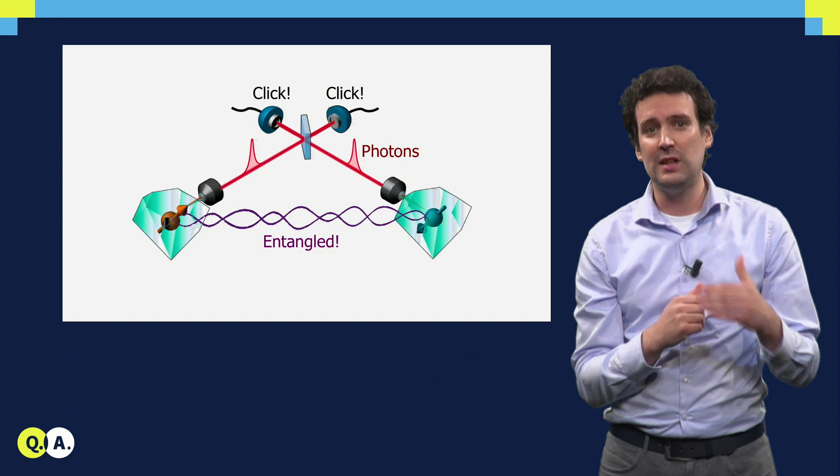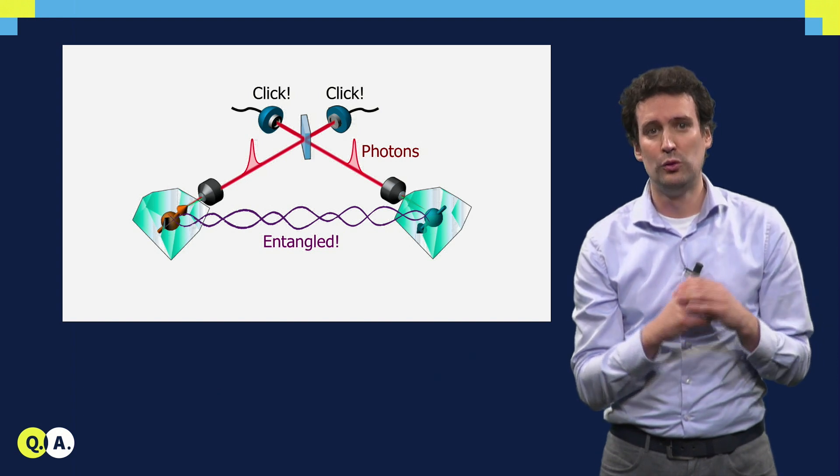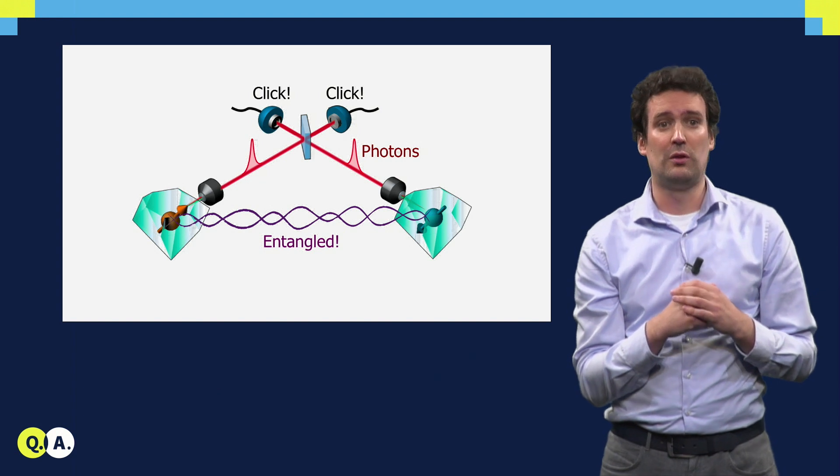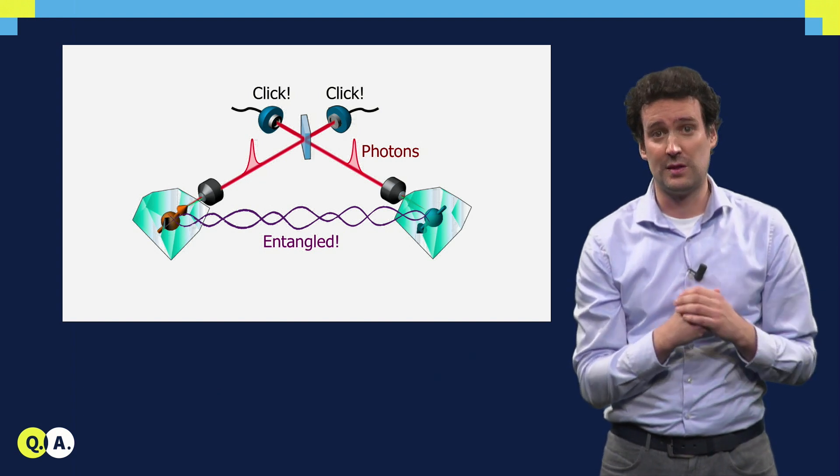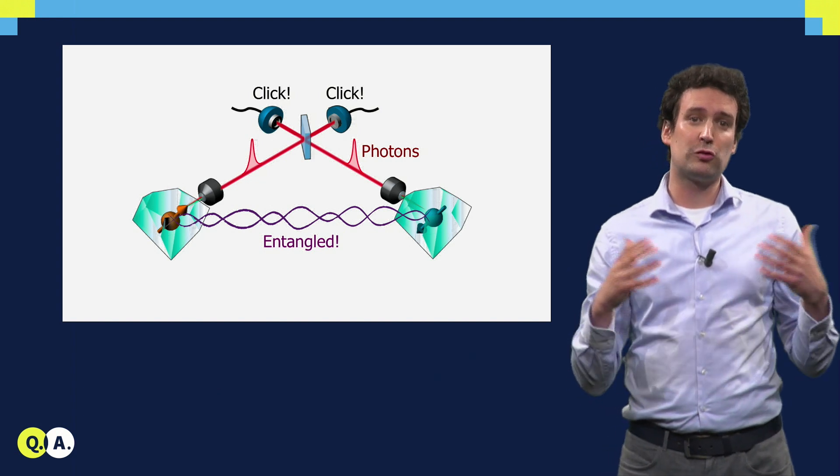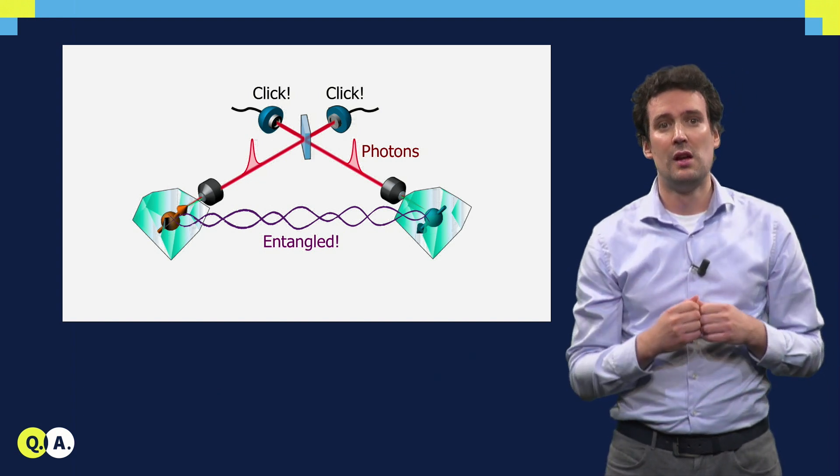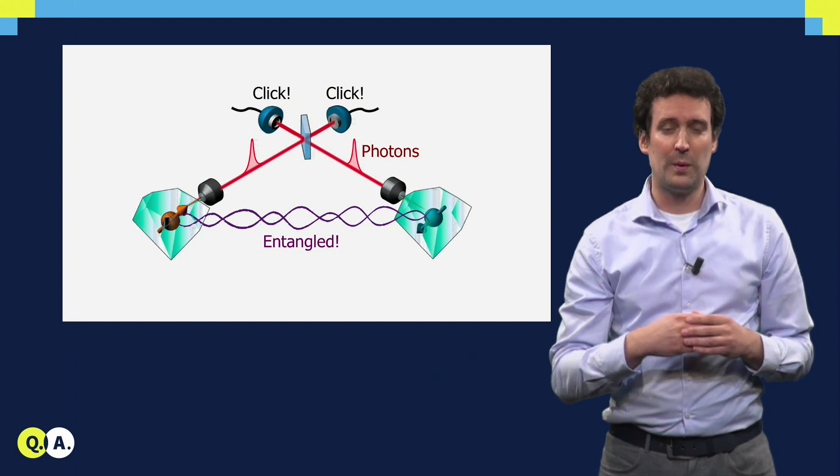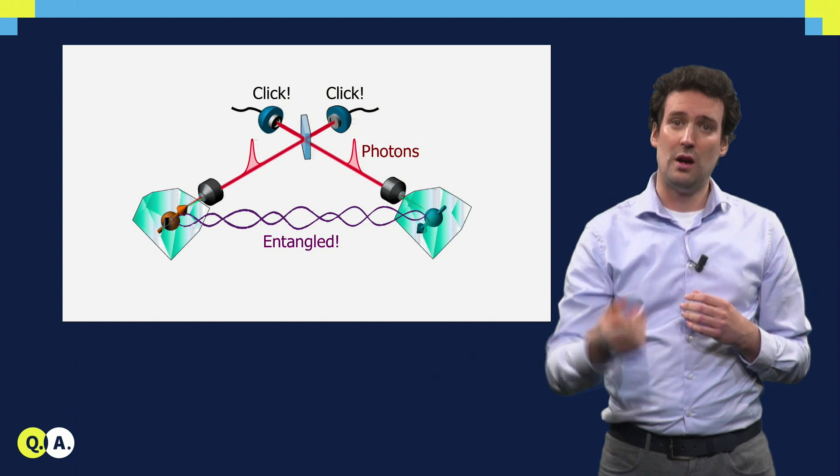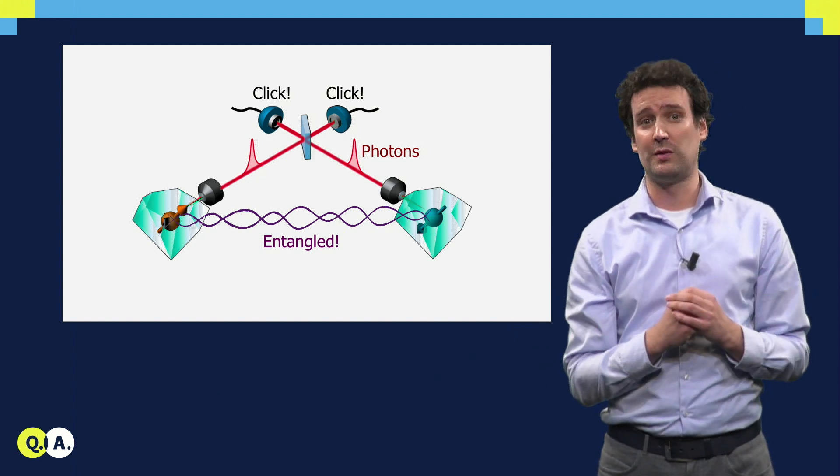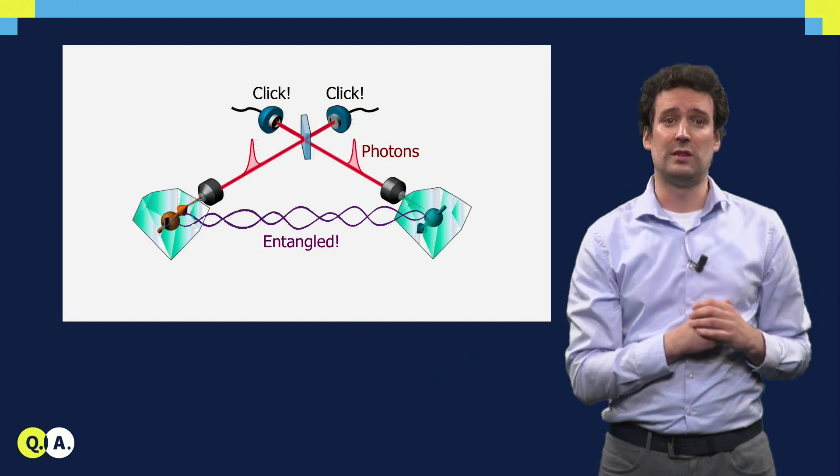Note that this does not succeed every time we try. Not all measurement outcomes lead to entanglement, and photons are also often lost on the way to the detectors. This is not a problem because we are just trying to create entanglement to use it as a resource to perform quantum computation in our network. So we can just keep trying until we get the right measurement outcome, which then heralds the generation of our entangled state, and then we can use it in the network.